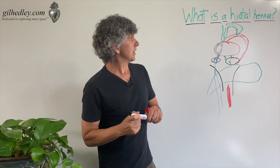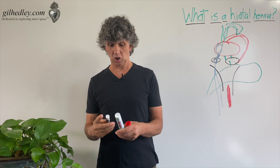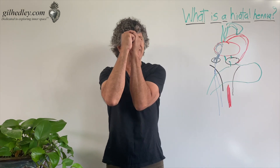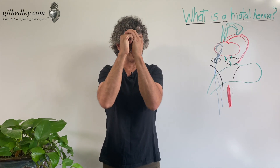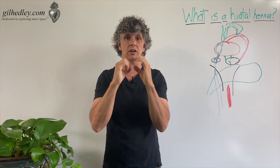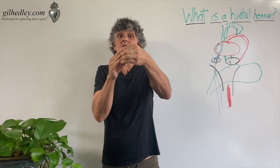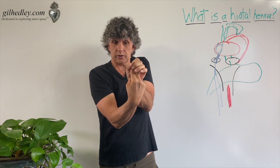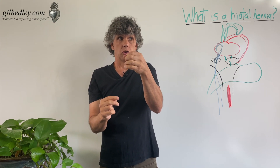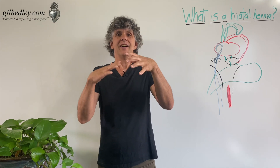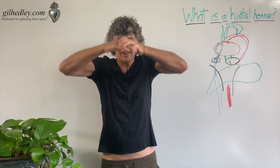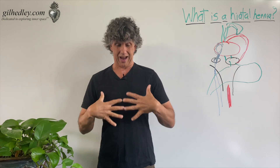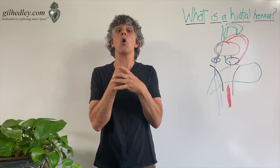So the esophageal hiatus is where a hiatal hernia would happen. But how? You know how cameras work — they have an aperture that dials open and dials closed, changing the amount of light that goes through. Well, what if the aperture for the esophagus through to the stomach opens too much? Too much failure of the diaphragm to hold the organs back from migrating through the higher pressure zone of the abdomen into the lower pressure zone of the chest.